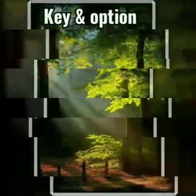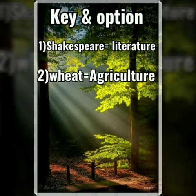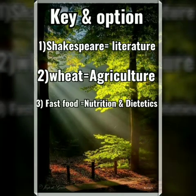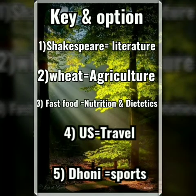Third tip — match the options with keywords. First one: Shakespeare — literature. Second one: wheat — agriculture. Third one: fast food — nutrition and dietetics. Fourth one: US — travel. Fifth one: Dhoni — sports. This is how you match the options.